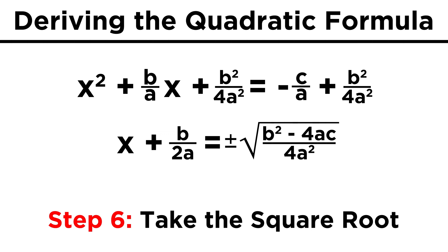Now we can take the square root of both sides. For the left, that just gets rid of the exponent. On the right, instead of one big radical, we can put one on the numerator, and one on the denominator. The numerator can't be simplified, so let's leave the plus minus there, but the denominator is a perfect square, so we can change that into two a.